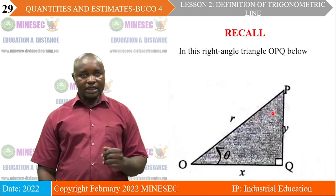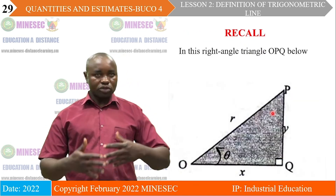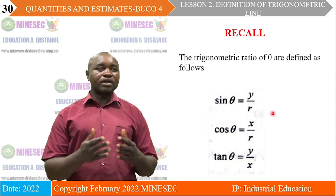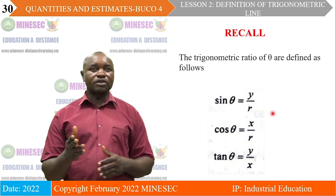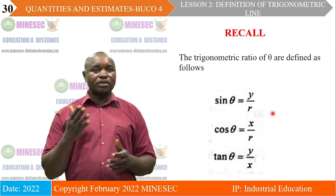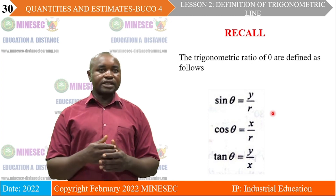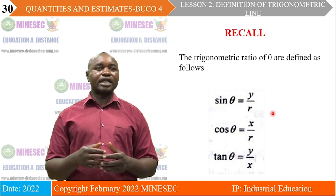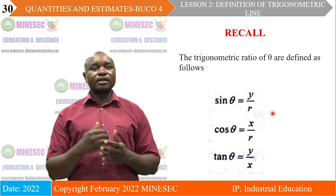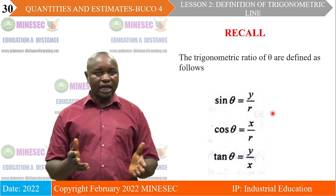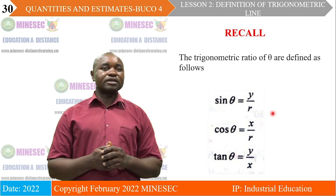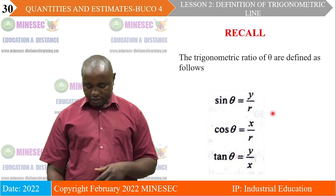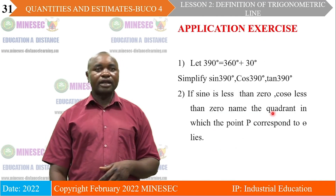For recall: sine theta is equal to y on r — that is opposite on hypotenuse. Cosine theta is equal to x on r — that is adjacent on hypotenuse. Tangent is equal to y on x, which is equal to opposite over adjacent.